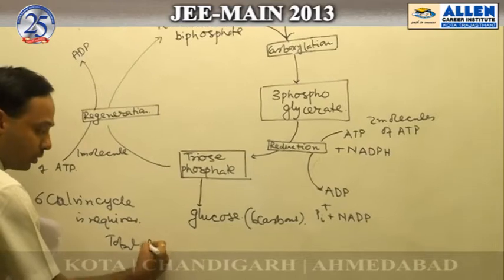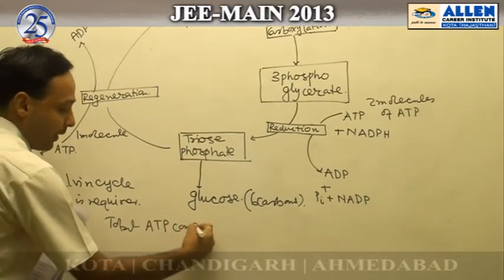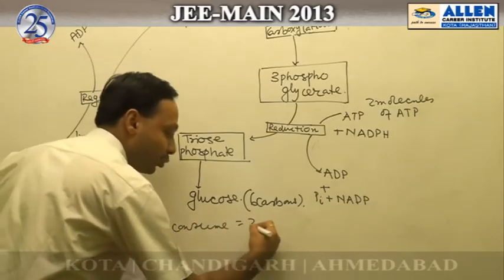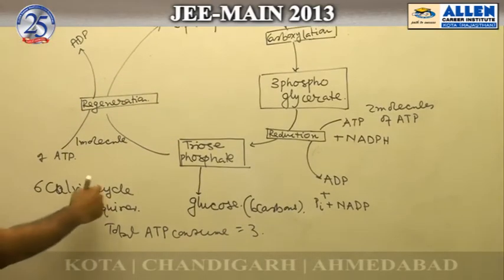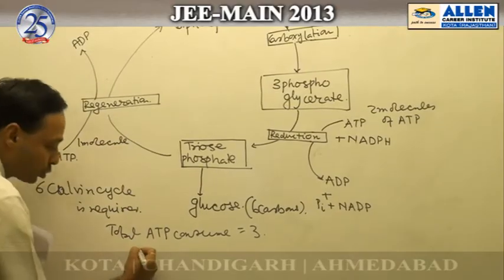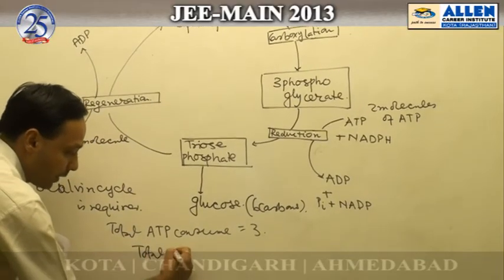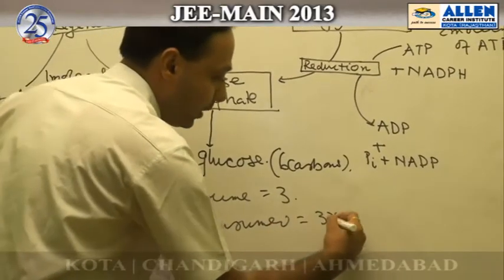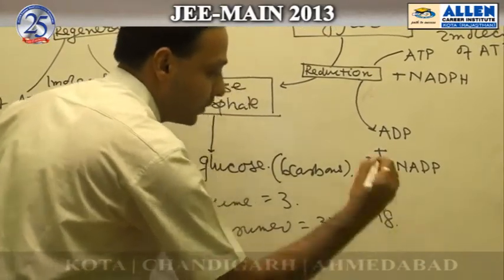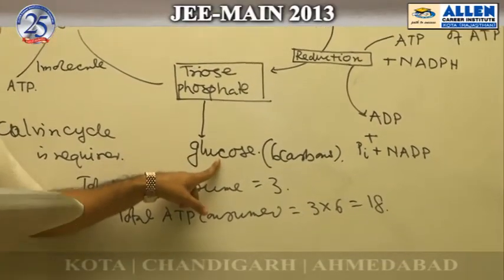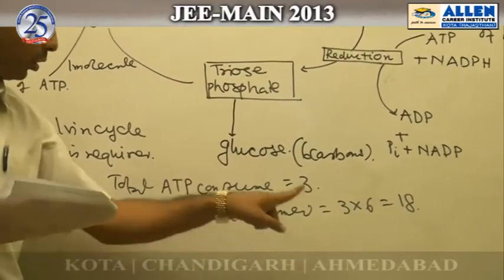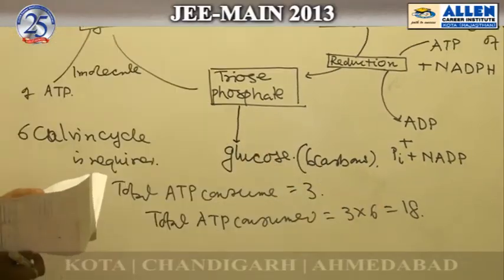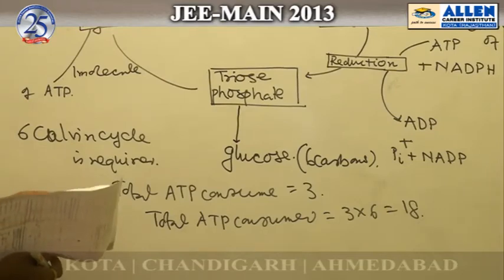Total ATP consumed in one Calvin cycle is 3. Since 6 Calvin cycles are required, total ATP consumed is 3 multiplied by 6, which equals 18. So to produce one molecule of glucose, a total of 18 molecules of ATP will be consumed. The answer is option 1.